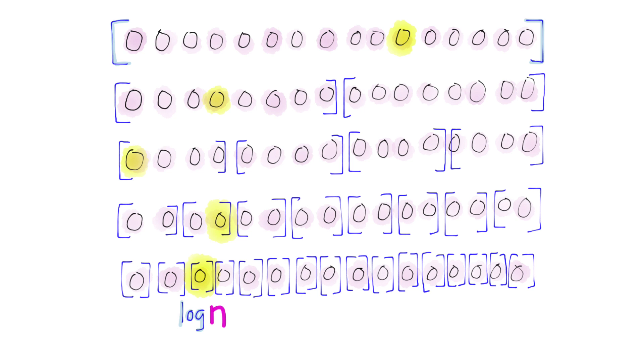So each item takes log n steps before it finds its place, and since there are n items, the total number of steps in a quicksort is n times log n.